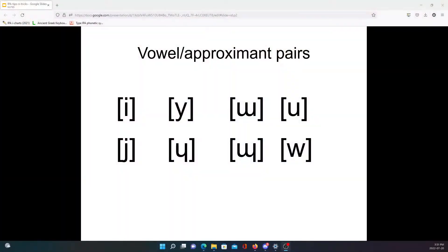Okay, in this video we're going to be looking at four pairs of symbols, pairs of vowel and approximant symbols that are kind of related to each other in interesting ways as a way of helping to remember some of the trickier symbols in the IPA.